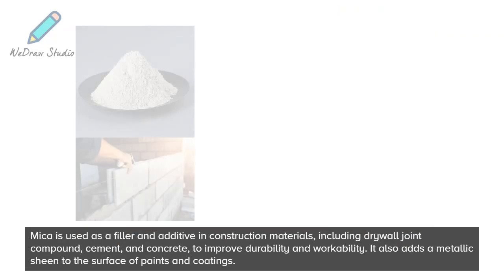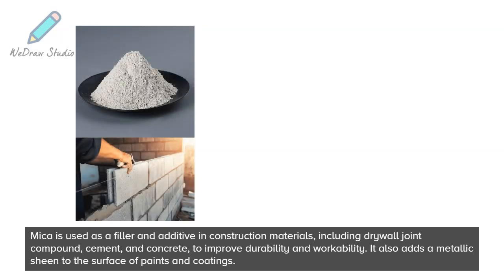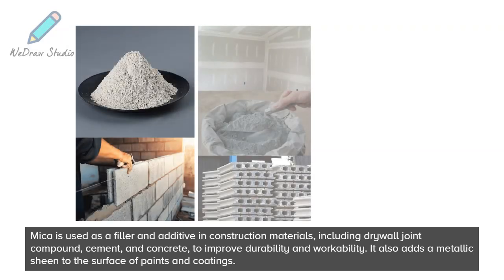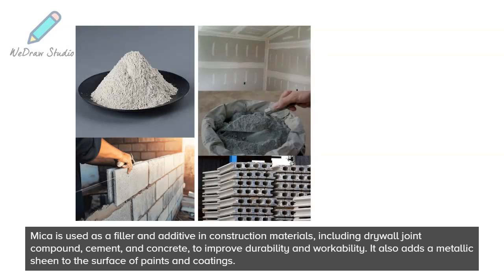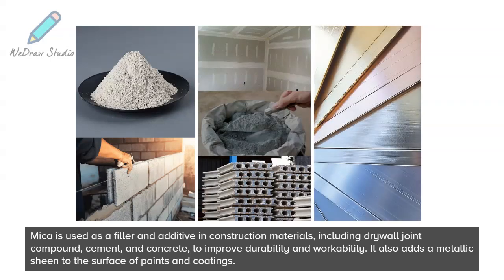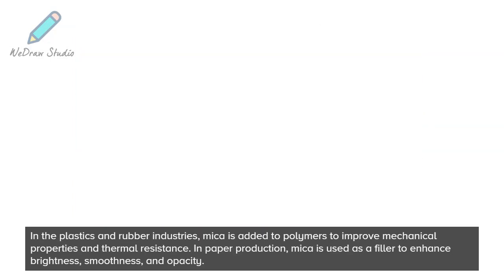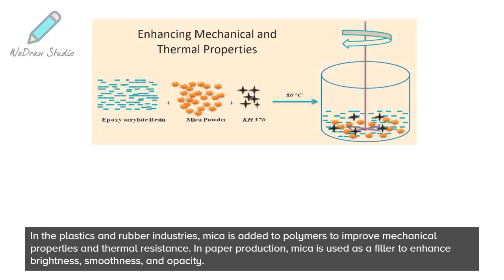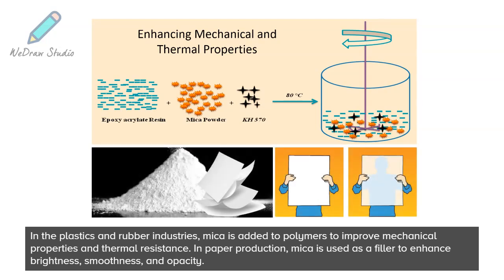Mica is used as a filler and additive in construction materials, including drywall joint compound, cement, and concrete, to improve durability and workability. It also adds a metallic sheen to the surface of paints and coatings. In the plastics and rubber industries, mica is added to polymers to improve mechanical properties and thermal resistance. In paper production, mica is used as a filler to enhance brightness, smoothness, and opacity.